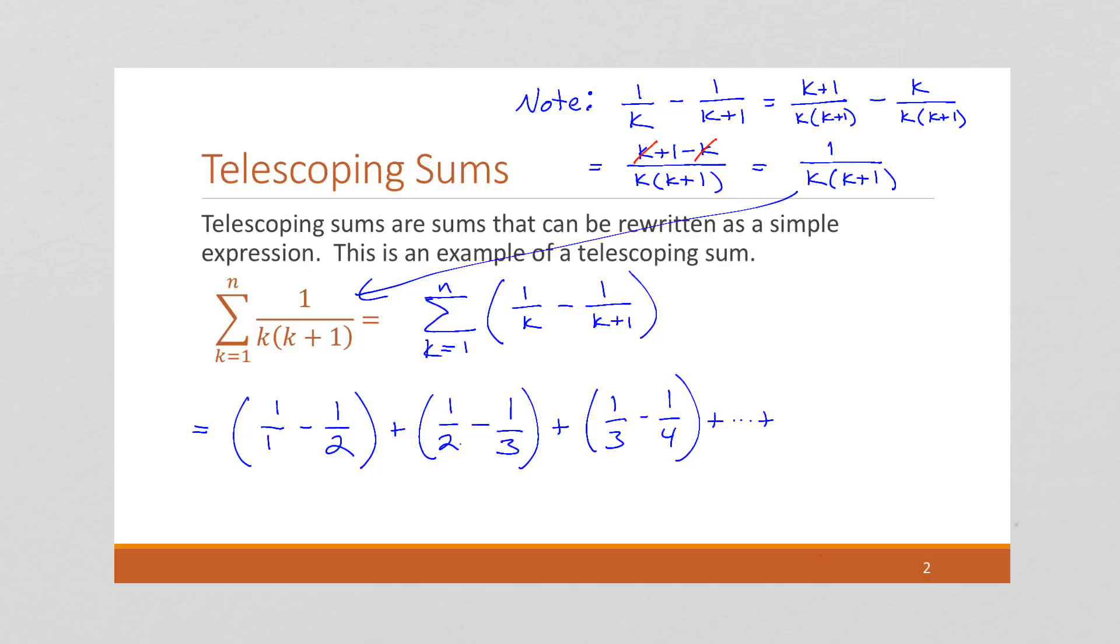So the next to last will be n minus 1, so this is going to be 1 over n minus 1 minus 1 over n minus 1 plus 1 is n. And then finally this last one, 1 over n minus 1 over n plus 1.